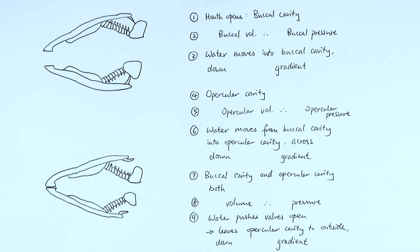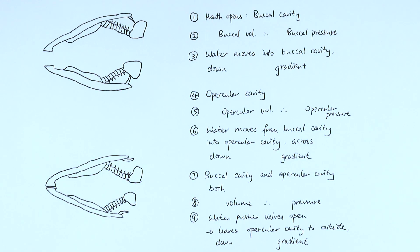In this video we'll be looking at the gas exchange system in bony fish. One thing to notice is that the way fish breathe is actually very similar to how mammals breathe. In the mammalian gas exchange system, it's about changing the thorax volume and hence changing the thorax pressure, comparing it to the atmospheric pressure, so that air can come in or out of the lungs.